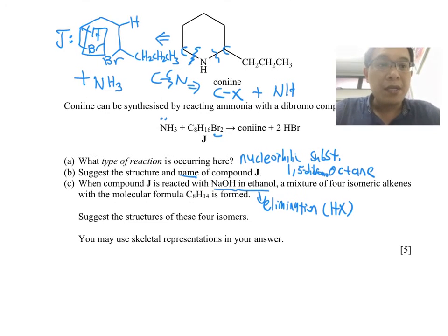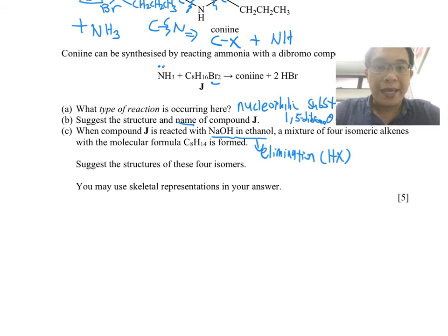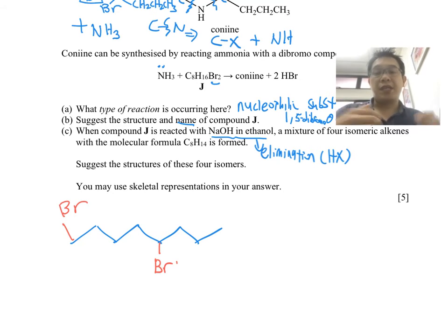So this is what I'm going to do right now. So I'm going to draw eight carbons. Okay, so this is eight carbon. So on the first position, let me just use a different color. In the first position I have a Br, so this is one, two, three, four, five. So on the fifth position I put another Br. All right, so this is basically the molecule of the type. Then you go through elimination.